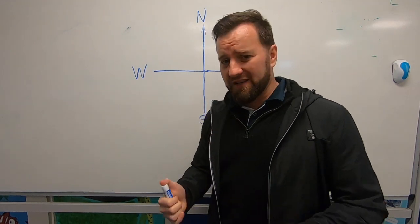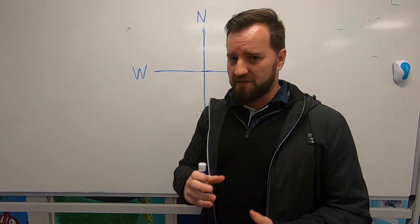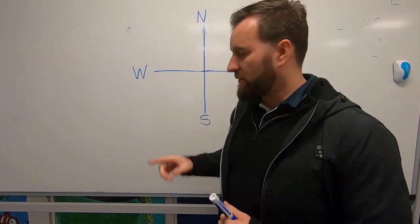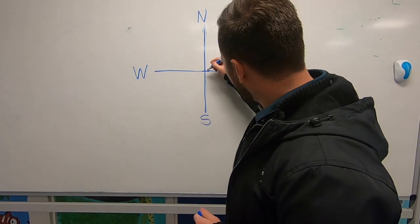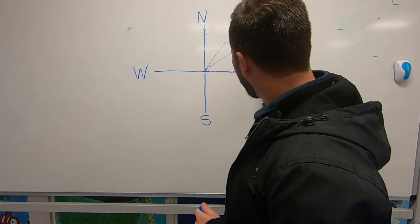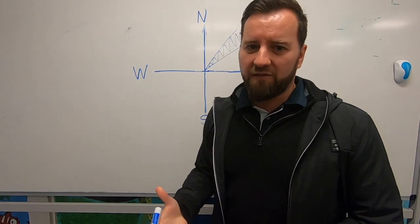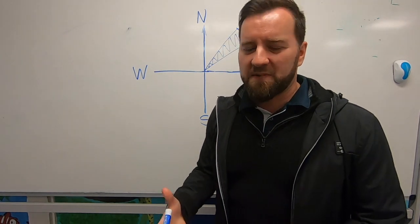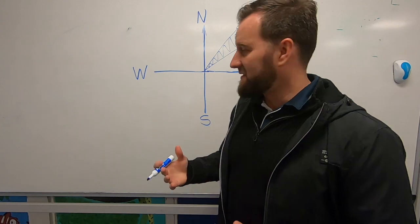So what are bearings? Bearings are just a more accurate way of doing direction — just trying to be more specific. If you were to travel in a northeasterly direction, then really anywhere in this whole vicinity is northeast. There's a margin of error there; we're not very specific when we say northeast. So we need something a bit more specific. This is where bearings come in.